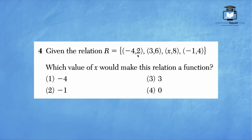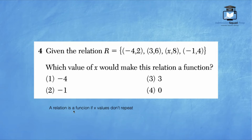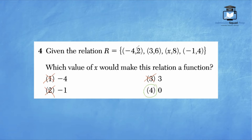Number four: given the relation r equals {(negative 4, 2), (3, 6), (x, 8), (negative 1, 4)}, which value of x would make this relation a function? Remember, for functions, x values don't repeat. The new x value cannot be negative 4, 3, or negative 1, but it can be 0 because 0 does not appear in any of the other coordinate points.